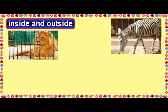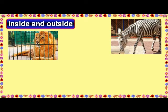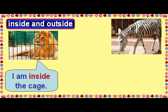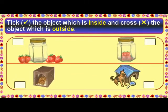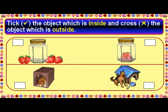Inside and outside. I am inside the cage. I am outside the cage. The strawberries are outside the jar. The strawberries are inside the jar. The dog is inside the kennel. The dog is outside the kennel.